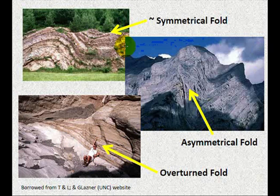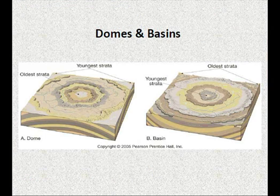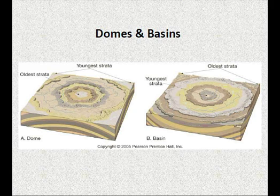So you have your symmetrical, asymmetrical, and overturned folds. Moving right along to two special types of folded structures. This gets back to the hill-type structures versus the valley-type structures, if you will.